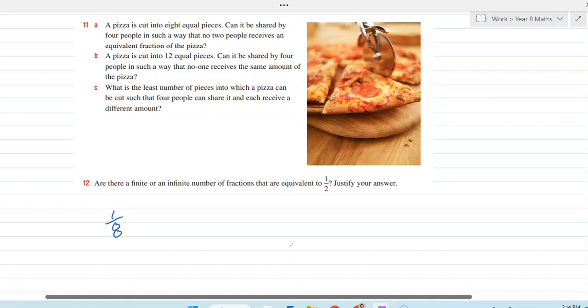Is there a way that four people in such a way that no two people received an equivalent fraction of the pizza?